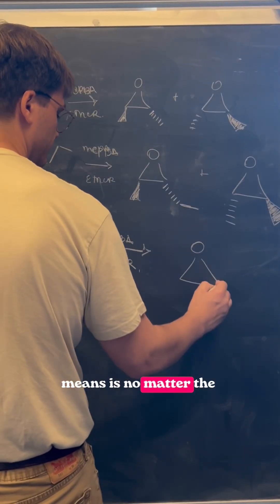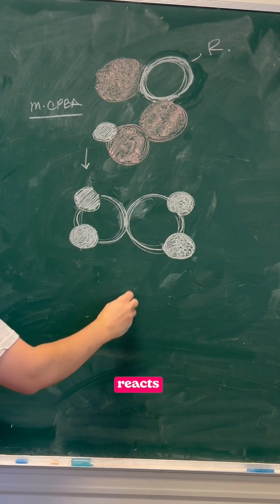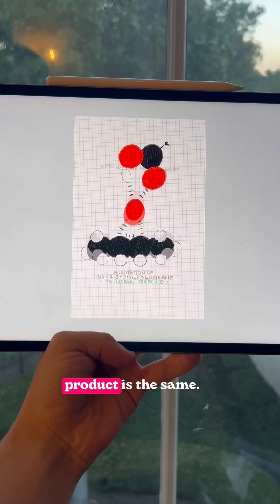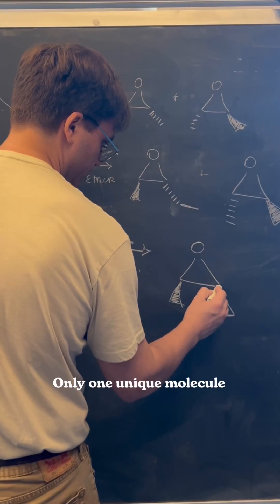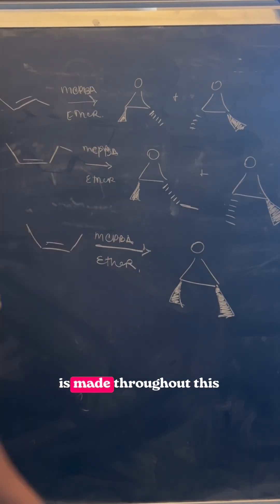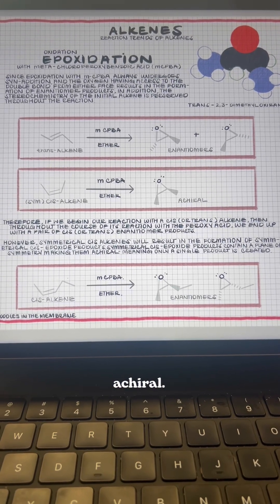In summary, what this means is, no matter the face the peroxy acid reacts with the alkene on, the product is the same. Only one unique molecule is made throughout this reaction, and it's an achiral compound.